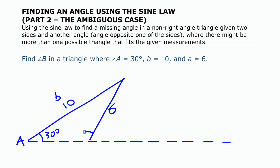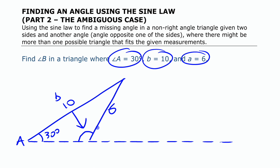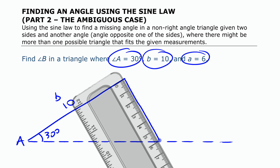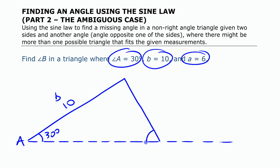So which one is it? If you're given information like that without a triangle to look at, it could be either one. I'm going to do the first one first, then look at the second. With the sine law, if I have angle A and side A together, and I'm given side B, I can find the angle across from B. I'll set up the proportion: sine A over A equals sine B over B.